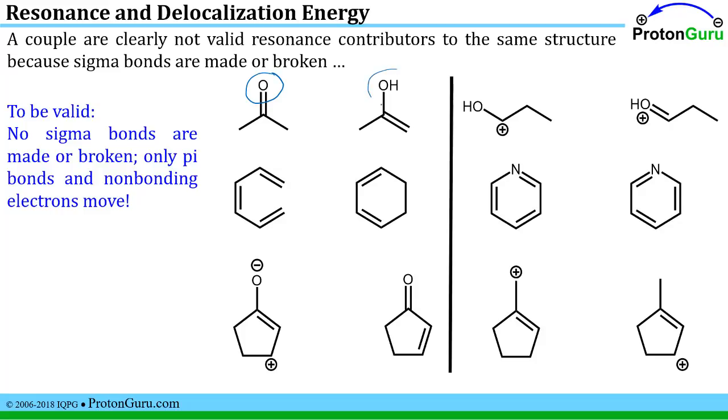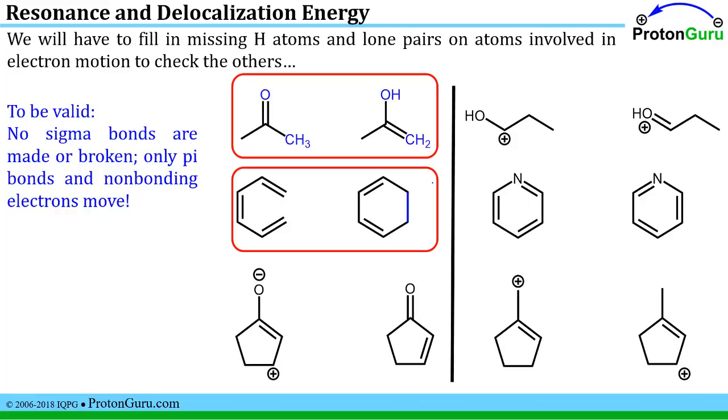So if I compare this one to this one, I've got a sigma bond to a hydrogen from this oxygen in this case but not in the other. So those can't be resonance contributors of each other. And this one here, I don't have a sigma bond here but I do in this other structure in the pair. So those two are the easiest to identify as being incorrect resonance contributors.